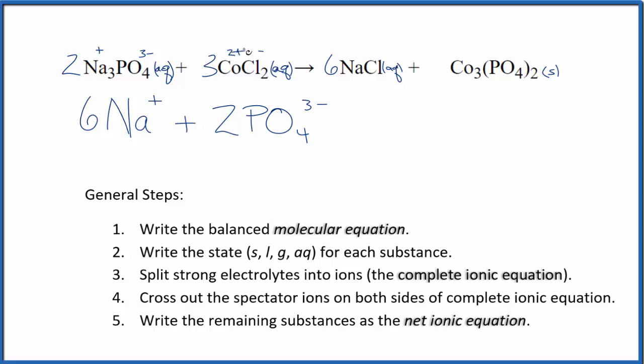So we have the cobalt two ion. We have three cobalt two ions, and when we have three times two, six of those chloride ions. So you have to be careful when you're adding all these up, get these numbers right.